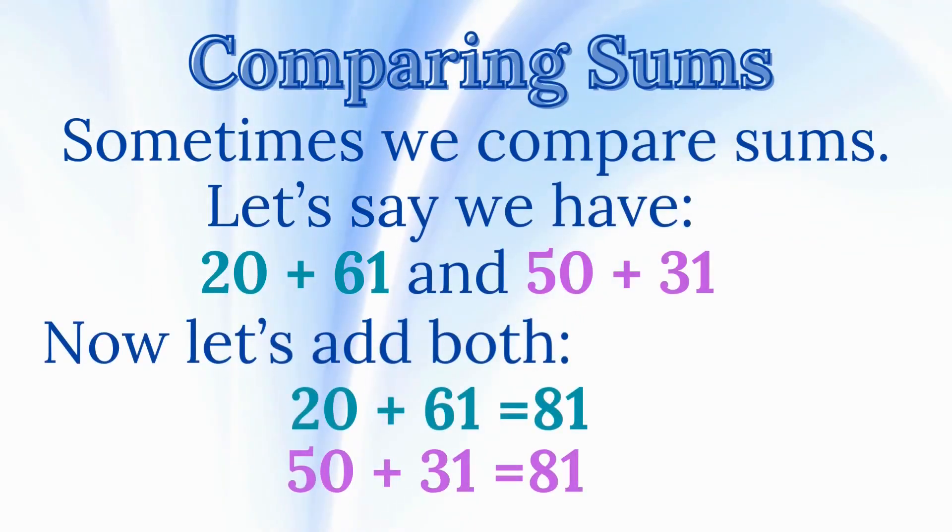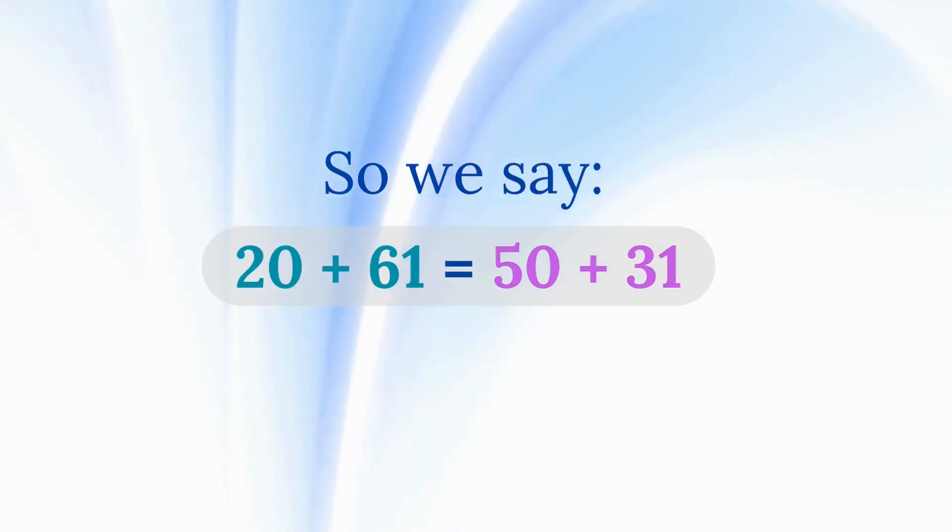Comparing sums. Sometimes we compare sums. Let's say we have 20 plus 61 and 50 plus 31. Now let's add both. 20 plus 61 equals 81. 50 plus 31 also equals 81. So we say, 20 plus 61 is equal to 50 plus 31.